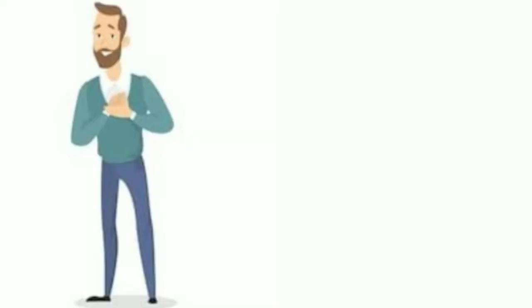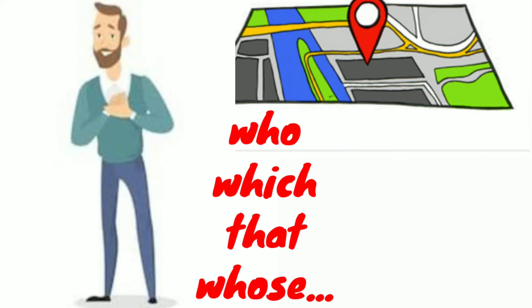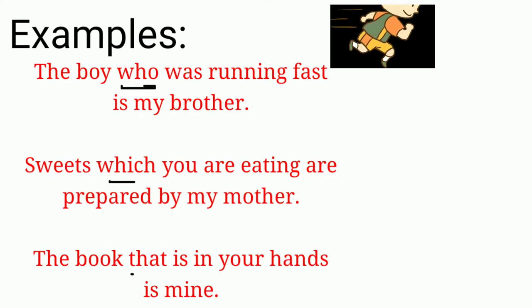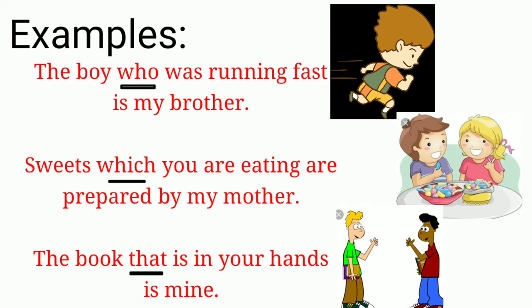When we speak about a person to recognize or identify him, or a place, we often use a few words like who, that, which, whose, and so on. Here are some examples: 'The boy who was running fast is my brother.' 'Sweets which you are eating are prepared by my mother.' 'The book that is in your hands is mine.' These underlined words are familiar pronouns.